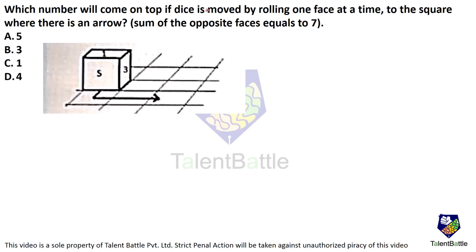Which number will come on top if the dice is moved by rolling one face at a time to the square where there is an arrow? The sum of opposite faces equals 7. Now 5 is over here, so the opposite face has to be 2. Opposite to 3 has to be 4, and the bottom face right now has to be 6.